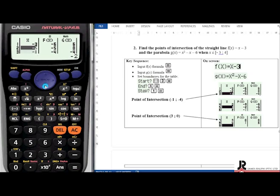If you use your down arrow and you scroll down, you will see at 3, X is equal to 3, Y, F of X is equal to 0, and G of X is equal to 0. There is your second point of intersection of your straight line and your parabola.